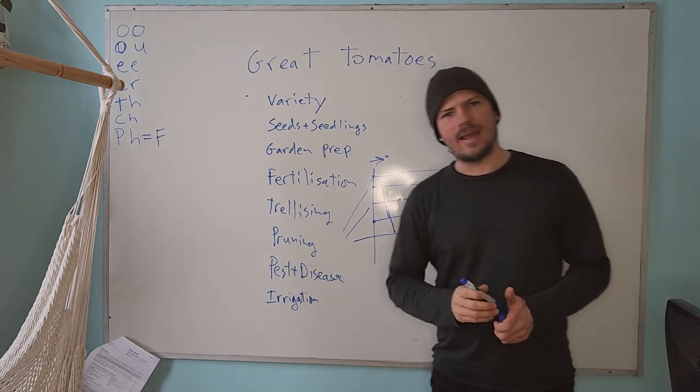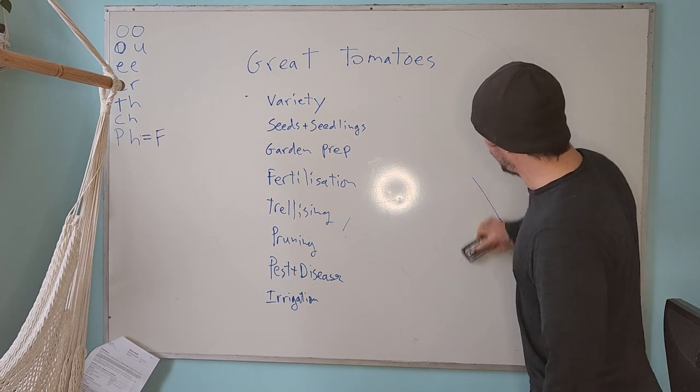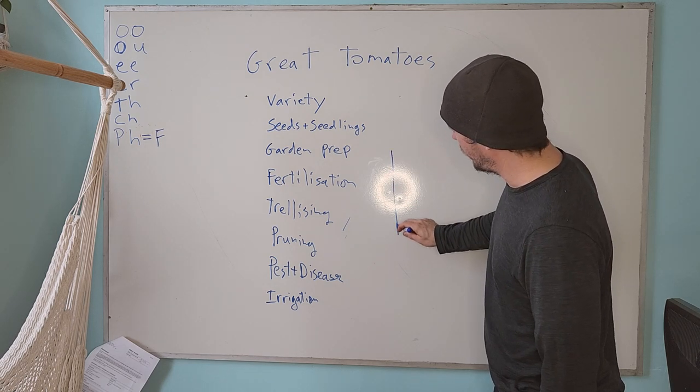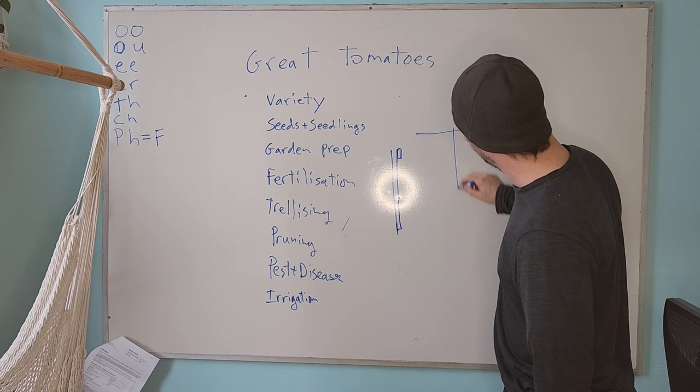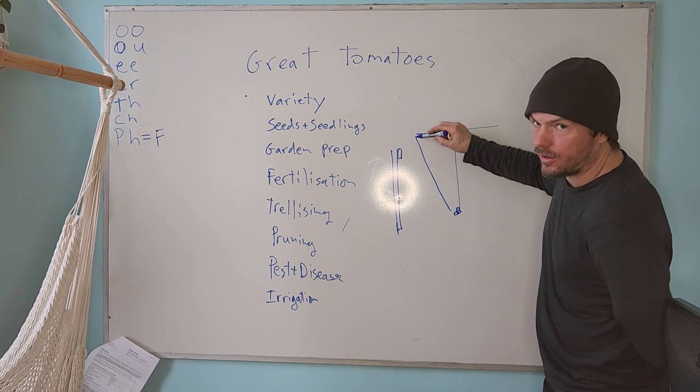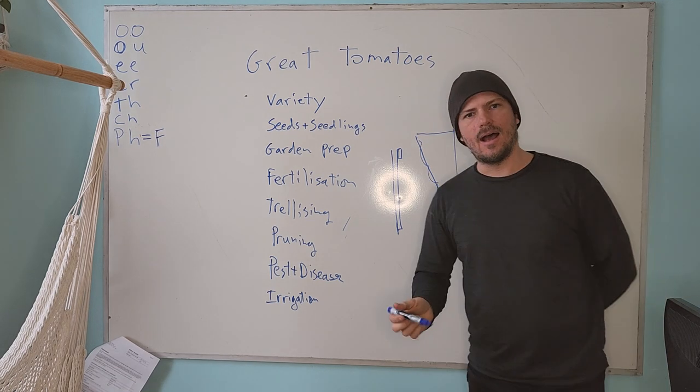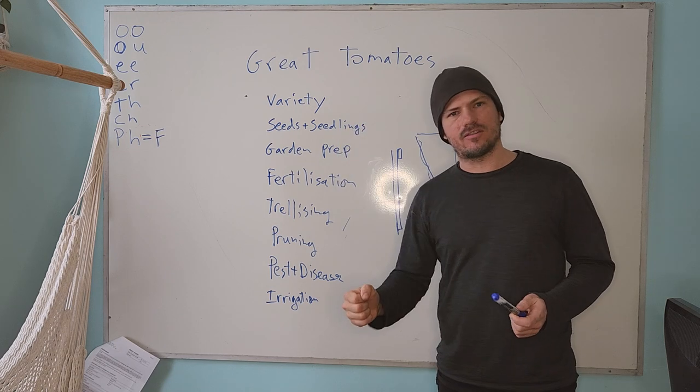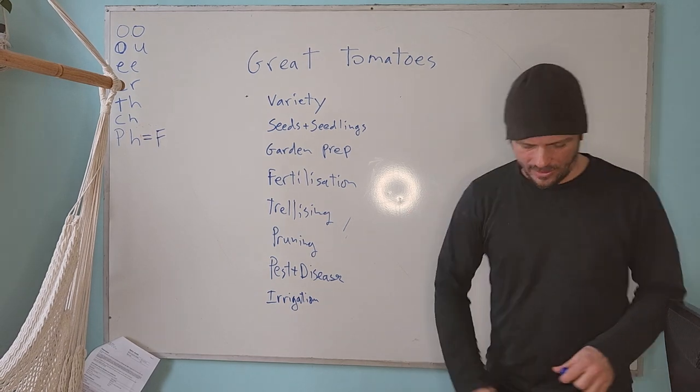It's called the basket weave technique. And you can also have a trellising technique where you could have a four by four going into the ground with a two by four across the top in a T shape, and then you'd have your tomato plant and you'd have a wire growing down that the tomato would be growing up. That's another option. But like I say, those trellising baskets can work great, or you can literally just have a single stake for each tomato. That's possible too. But I really liked the rebar and twine methods that I was showing there.